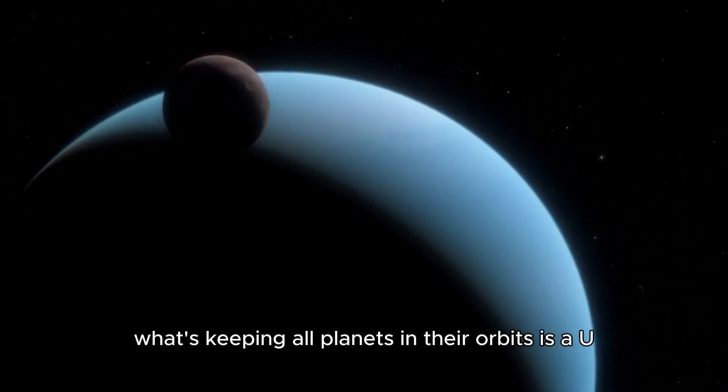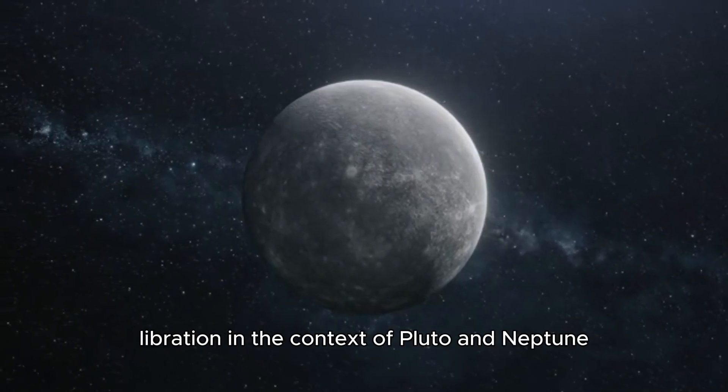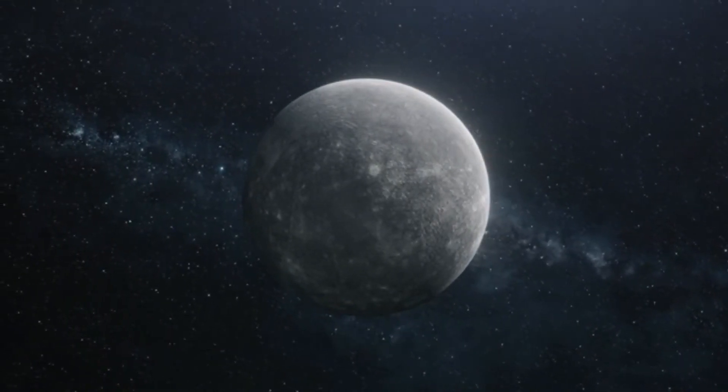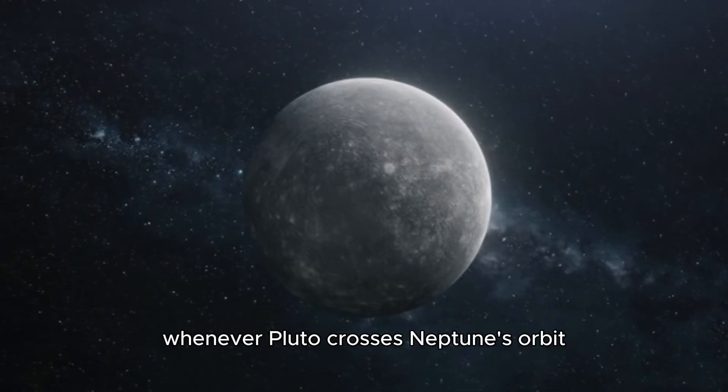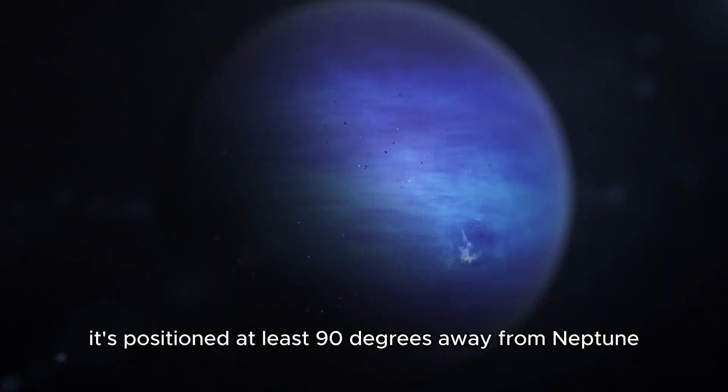What's keeping all planets in their orbits is O-libration. In the context of Pluto and Neptune, this term means that whenever Pluto crosses Neptune's orbit, it's positioned at least 90 degrees away from Neptune.